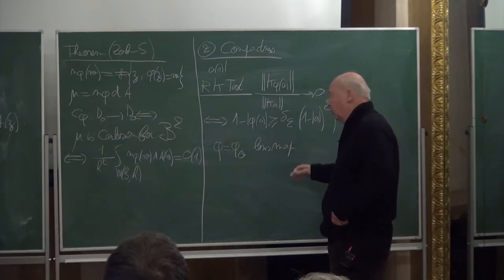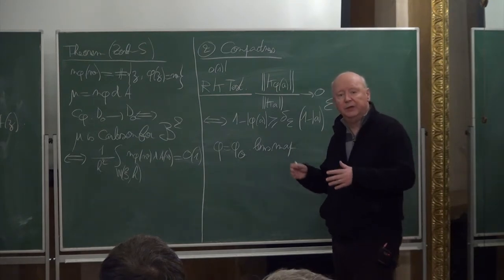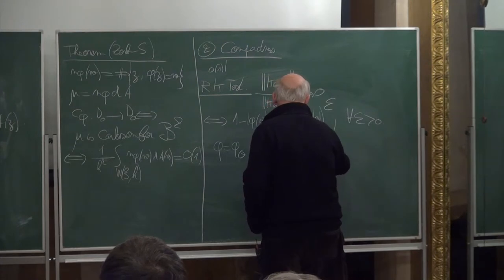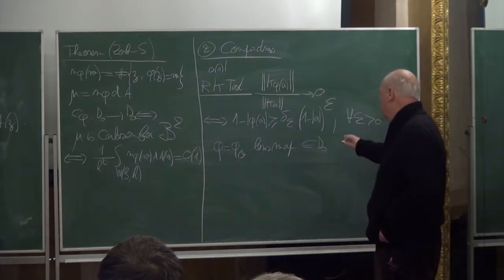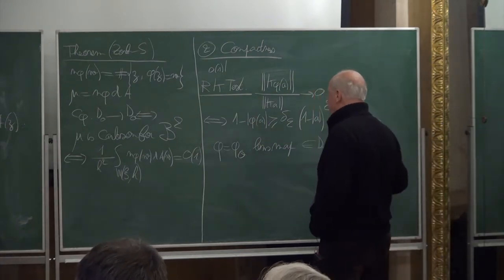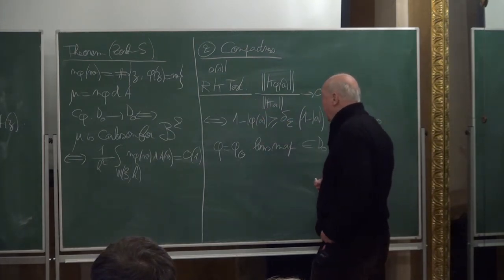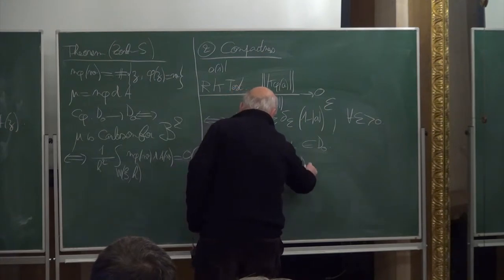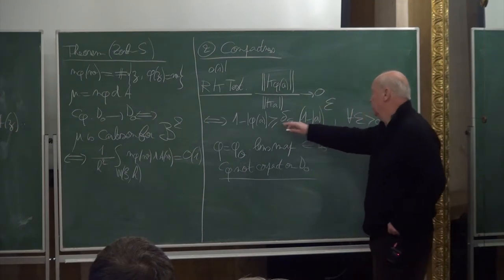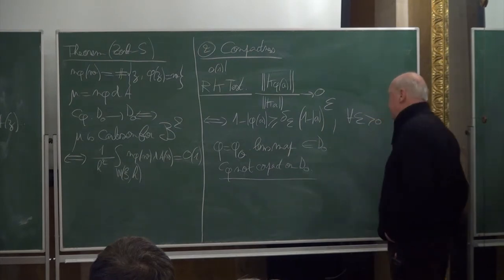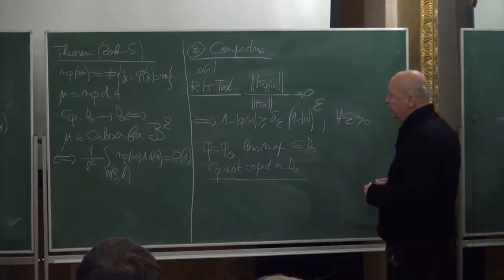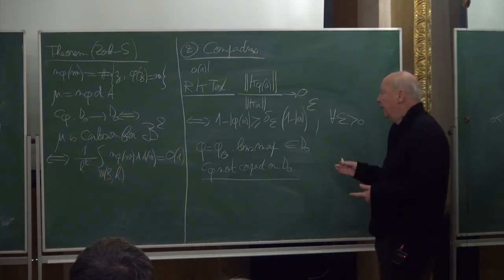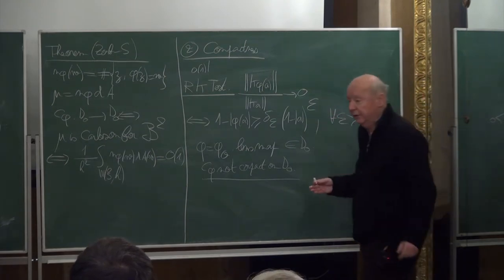For example, taking φ to be the lens map from yesterday: we know C_φ acting on the Hardy space was very compact — in every Schatten class with approximation numbers decaying like e^{−√n}. Here, φ belongs to D₀ and is injective, so C_φ is bounded from D₀ to itself, but it is not compact on D₀, simply because it fails to pass that reproducing kernel test. In some sense, for a composition operator associated to a given symbol it is much more difficult to be bounded or compact on the Dirichlet space than on the Hardy space.